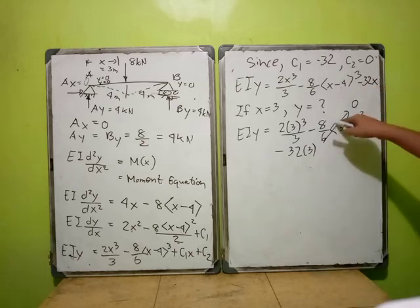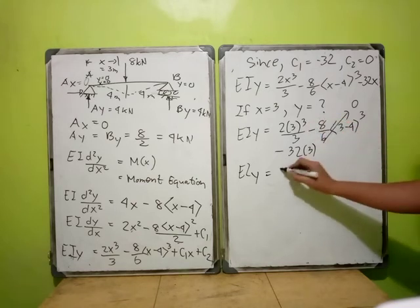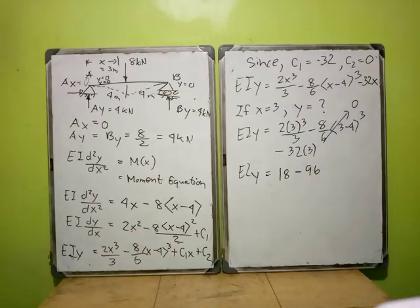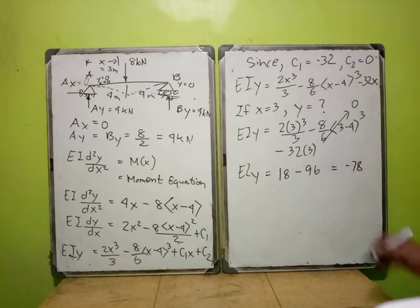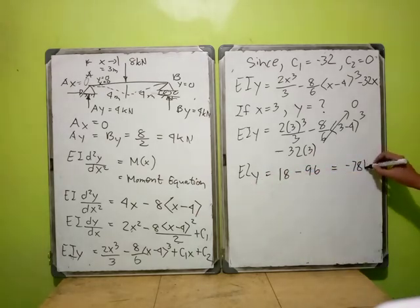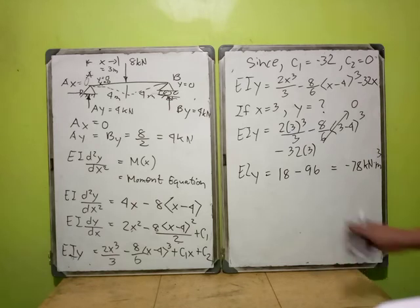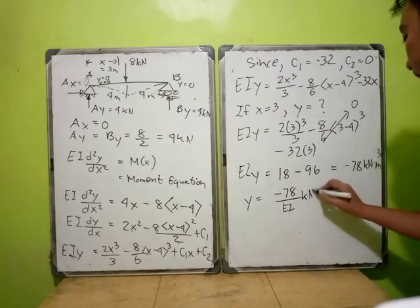When the bracket term is less than zero, it automatically becomes zero — so there are no negative values from that bracket. Therefore EI·Y equals negative 78, meaning Y equals negative 78 over EI in kilonewton·meter cubed. The negative sign means the deflection is downward.